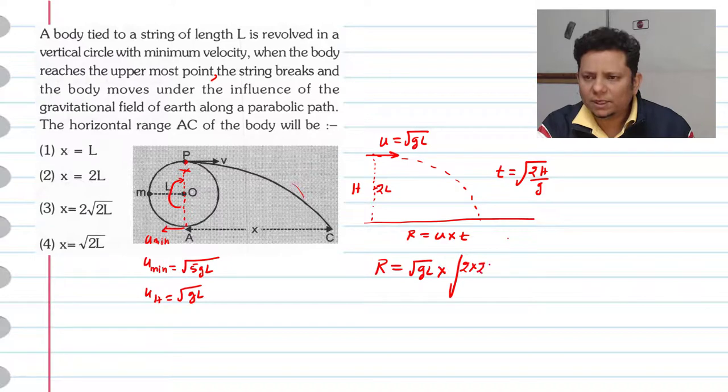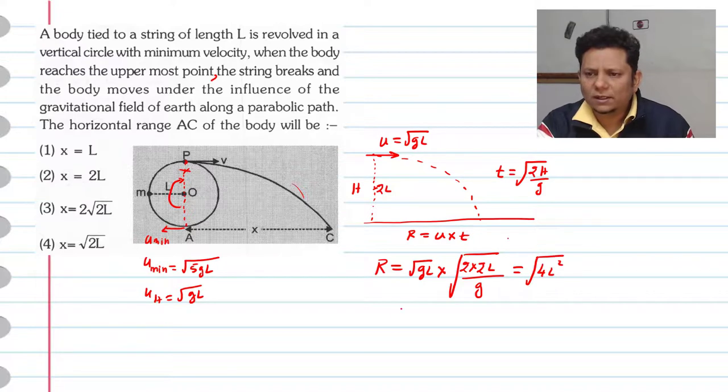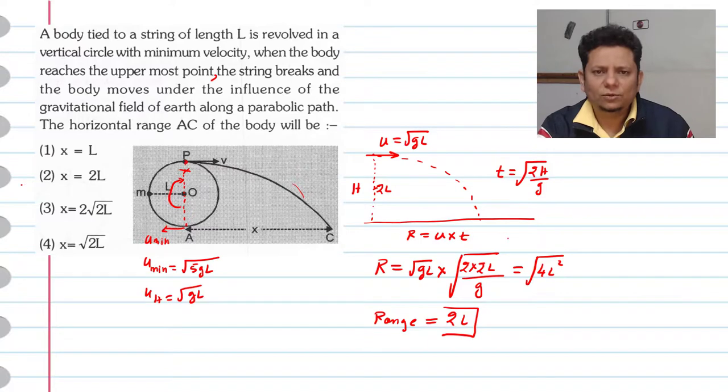So multiplied by 2L divided by g. Here g and under root g cancel out, L square remains. This will be equal to under root 4L square, which means the range AC will have a value of 2L. So the particle will fall exactly at 2L. Hence option number 2, x equals 2L, would be the correct answer.